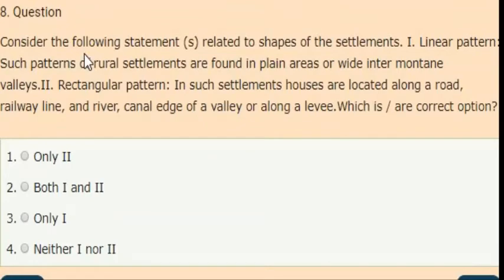Next question: consider the following statements which are related to shapes of the settlements. First statement: linear pattern. Such patterns of rural settlements are found in plain areas or wide inter-mountain valleys. Second statement: rectangular pattern. In such settlements, houses are located along a road, railway line and river, canal edge of a valley or along a levee. Which of these statements are correct? Options are: only second, both 1 and 2, only 1, neither 1 nor 2. The correct answer is option 4. Neither 1 nor 2 statements are correct.